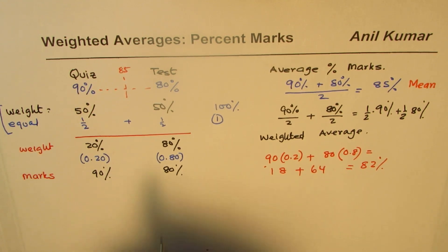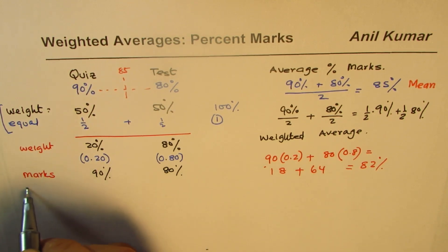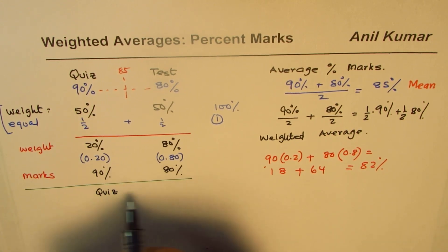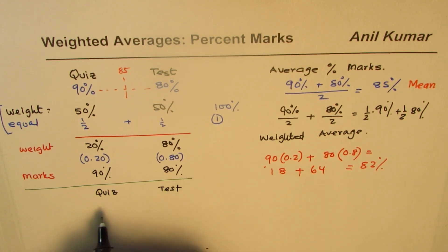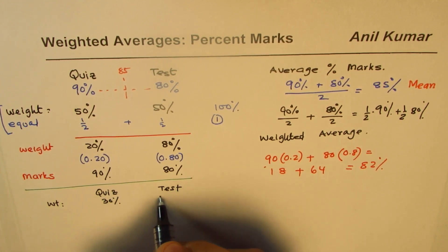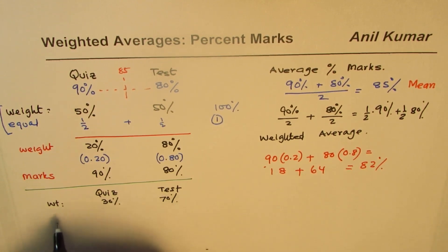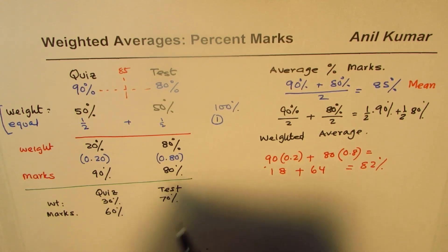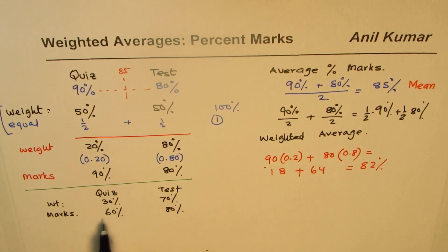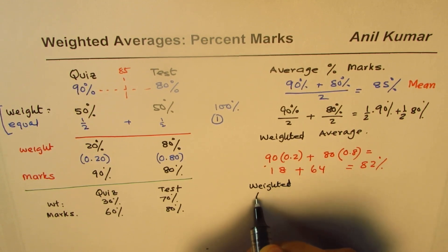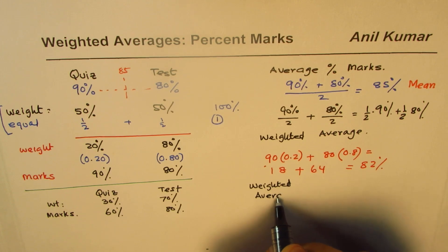Let's take another scenario where the weights are different. We have a quiz and a test. The weight for the quiz is 30 percent and for the test is 70 percent, because the whole should be 100 percent. The marks obtained in the quiz are 60 percent, but on the test you score higher — 80 percent. What is the weighted average? This is an exercise for you — you can pause the video and answer.